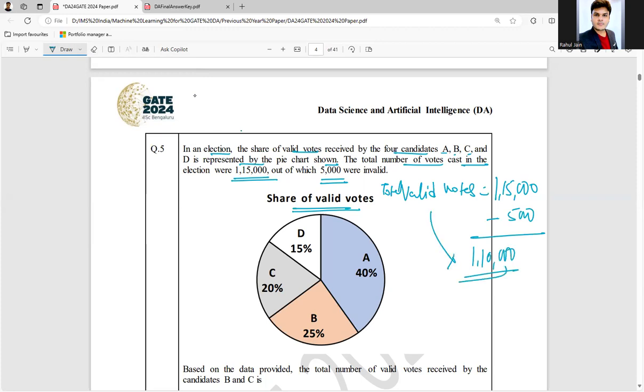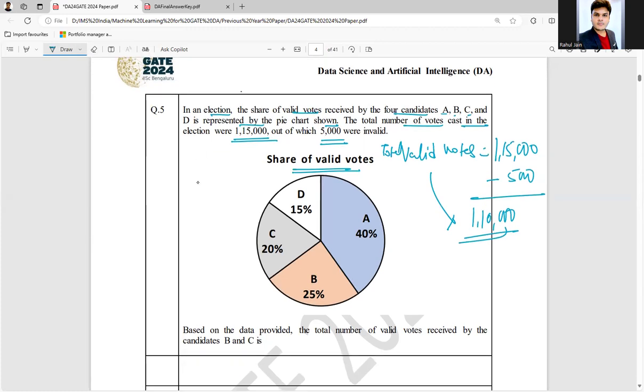Out of which, what they are asking: based on the data provided, the total number of valid votes received by candidates B and C. Candidate B is getting 25%, candidate C is getting 20%, that is 45% of 110,000.